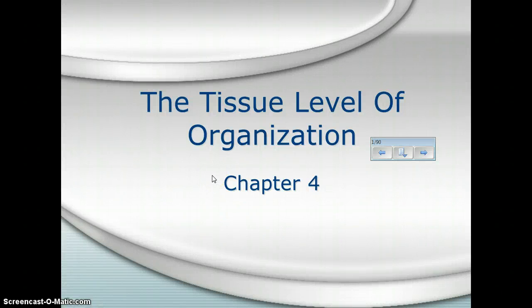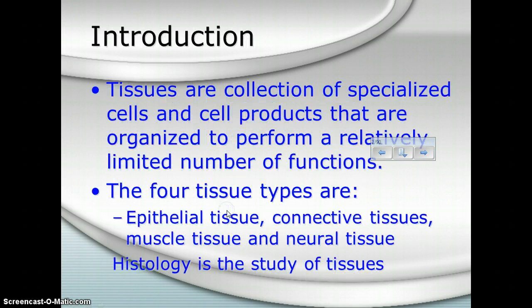Hey, this is Mrs. Perman, and I can't be with you today, so I'm trying something new. We need to go through our notes today, so please follow along in your notes as I tell you some of these things about cells and tissues. We've spent a bit of time talking about cells and cell structures, and in this next chapter we're going to look at how cells in the human body come together to form these specialized tissues that perform different functions.